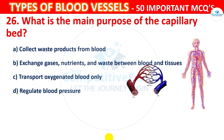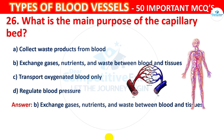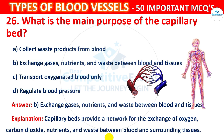The correct answer is B, that is to exchange gases, nutrients and waste between blood and tissues. The capillary bed provides a network for the exchange of oxygen, carbon dioxide, nutrients and waste between blood and surrounding tissues.